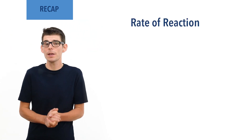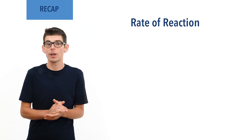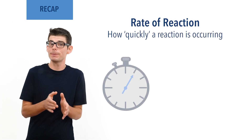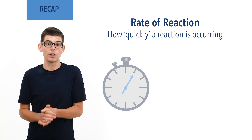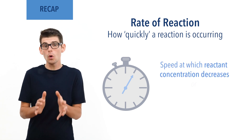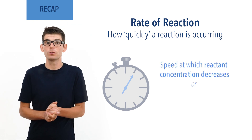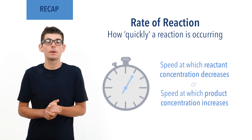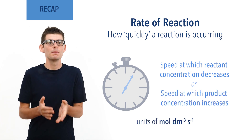Before we talk in detail about rate equations and rate constants, there are a few essential ideas you need to be comfortable with. Rates of reaction describe how quickly reactions are occurring. They can be measured in terms of the speed at which reactant concentration decreases, or the speed at which product concentration increases, giving the units moles per decimetre cubed per second.